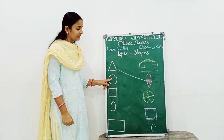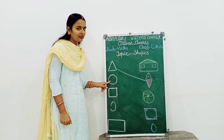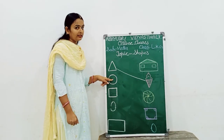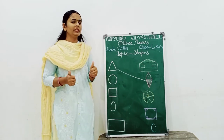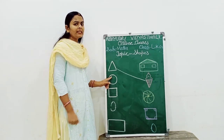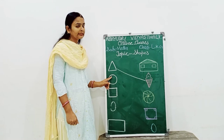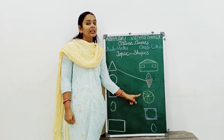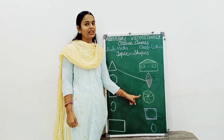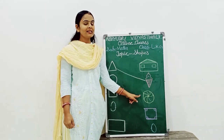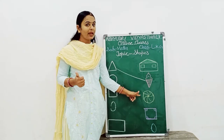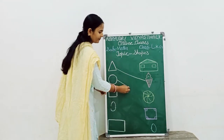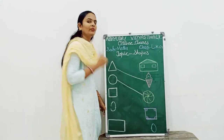Which shape is this? Circle. Now tell me, student — which figure is similar to circle? Yes, ball is similar to circle. Let's match. Very good.